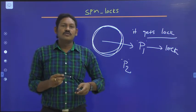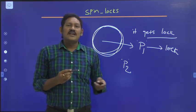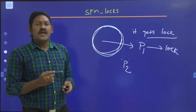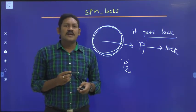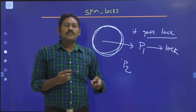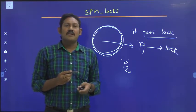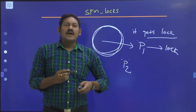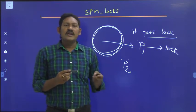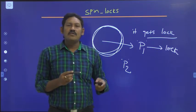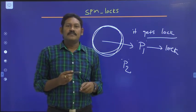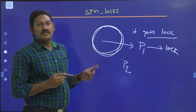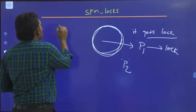Spin locks are also of two types: basic spin lock and reader-writer spin lock. The reader-writer spin lock allows multiple readers at a time but only one writer. No reader is allowed until the write operation is completed.